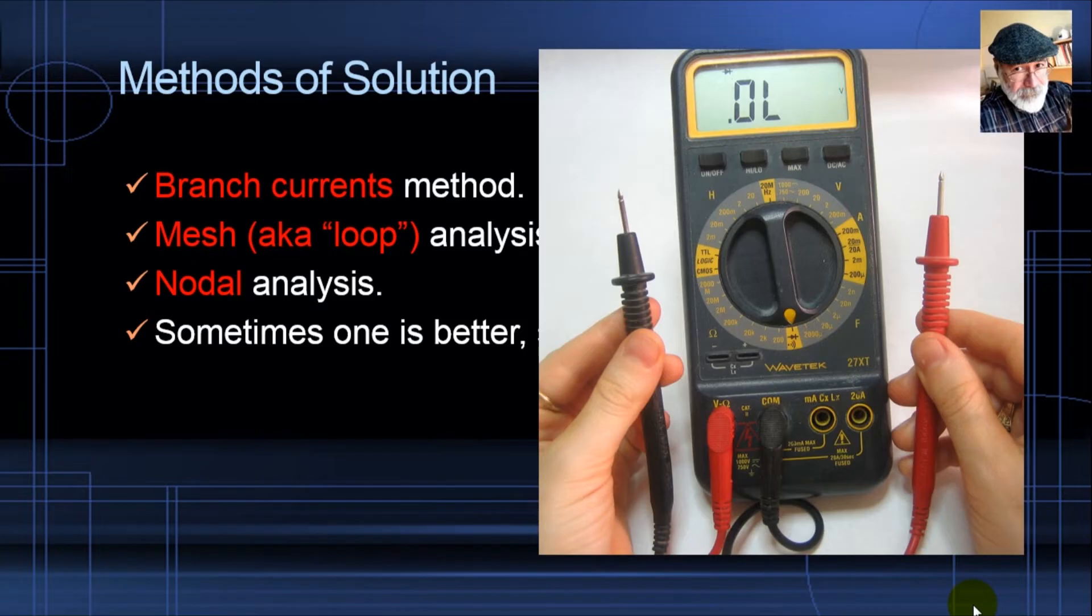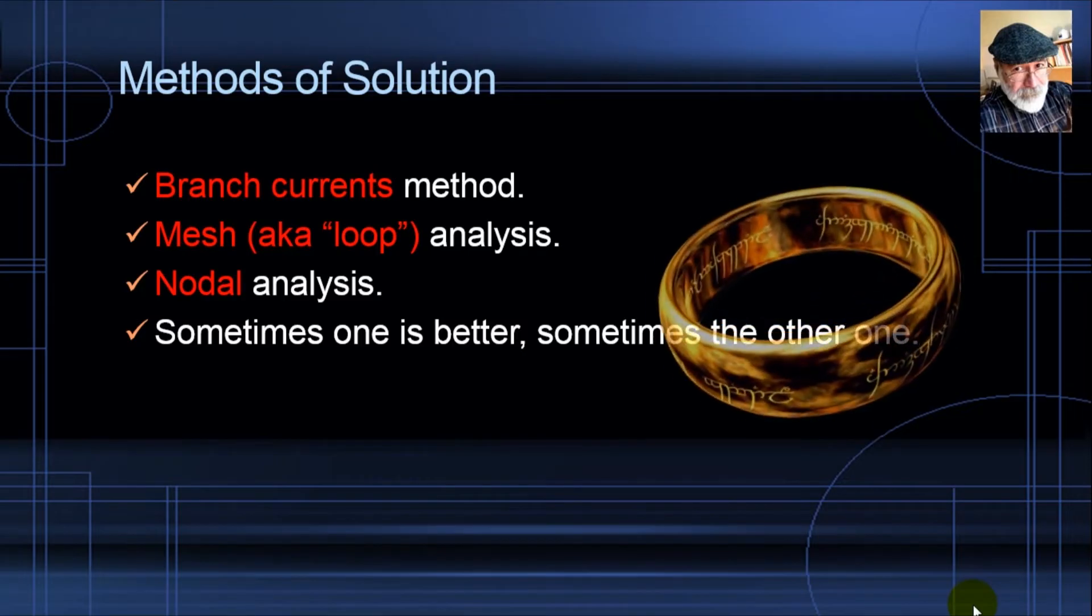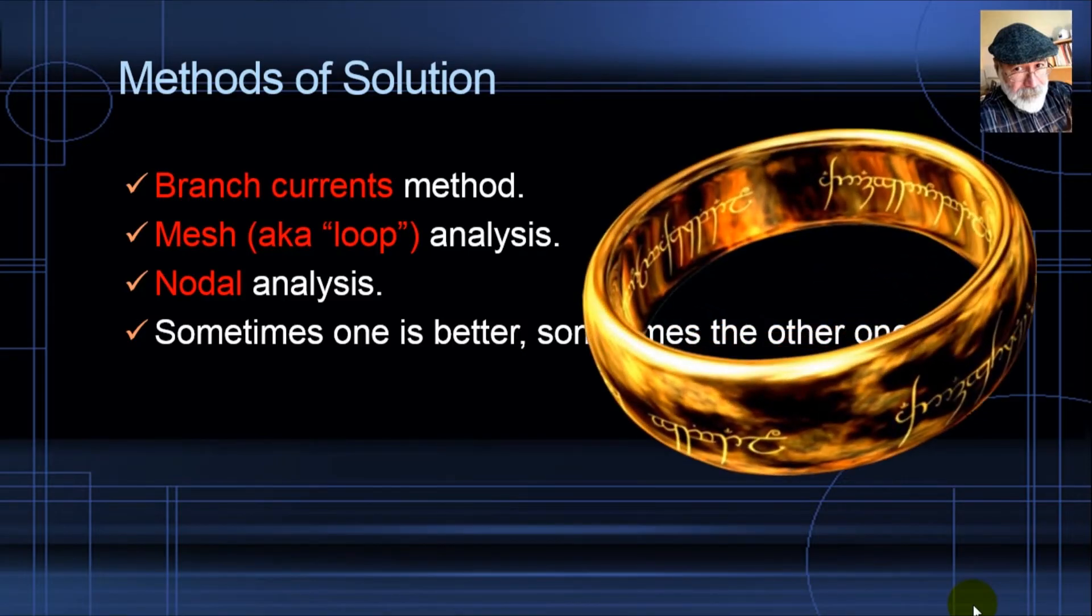For very large networks, only nodal analysis will go the extra mile. That is why at the end of the 20th century, Dr. Ho and his team, they figured out a way to improve nodal analysis so that it could deal with any possible topology thrown at it. It is one method to solve all circuits, one method to rule out all the other ones. Modified nodal analysis. That's the one we will start studying tonight.